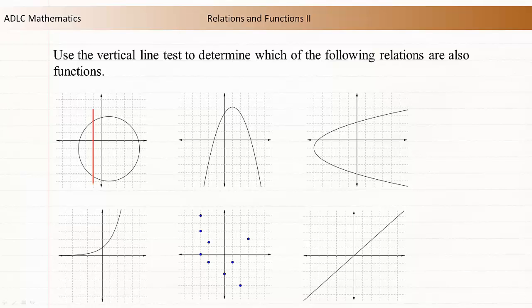In the first relation, a vertical line can be drawn in a way that touches the relation twice. This relation is not a function.